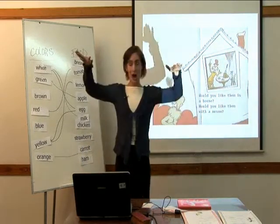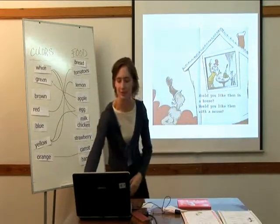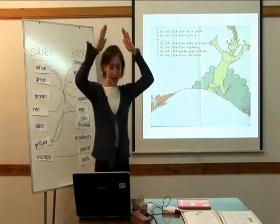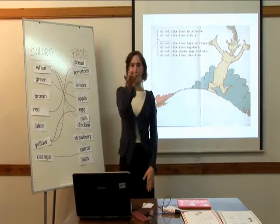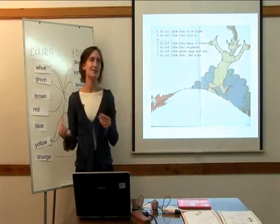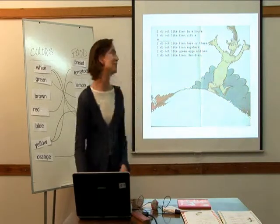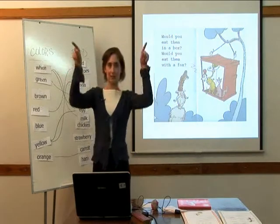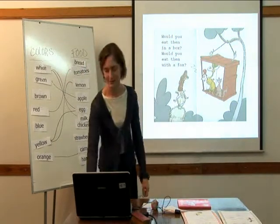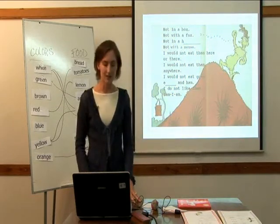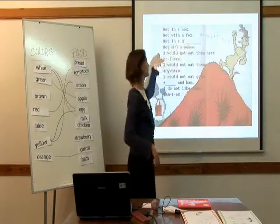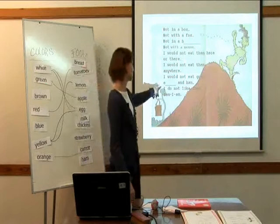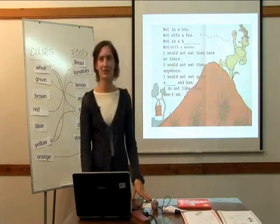'But would you like them in a house? Would you like them with a mouse?' Here's my mouse, in case the picture is very small. He says, 'I do not like them in a house, and I do not like them with a mouse. I do not like them here or there. I do not like them anywhere. I do not like green eggs and ham. I do not like them, Sam I am.' 'But would you eat them in a box? Would you eat them with a fox?' 'Not in a box, not with a fox, not in a house, not with a mouse. I would not eat them here or there. I would not eat green eggs and ham. I do not like them, Sam I am.'